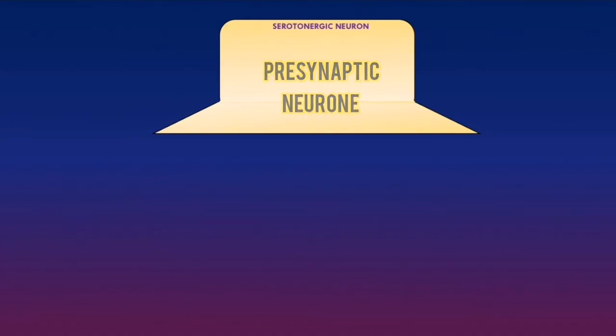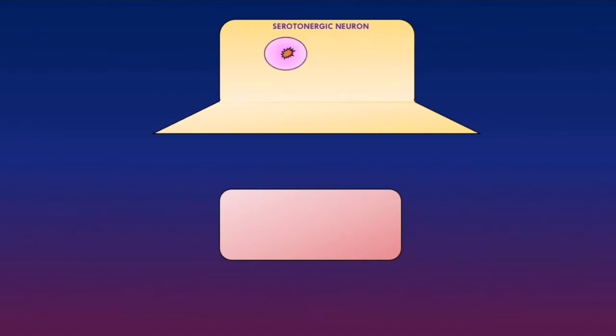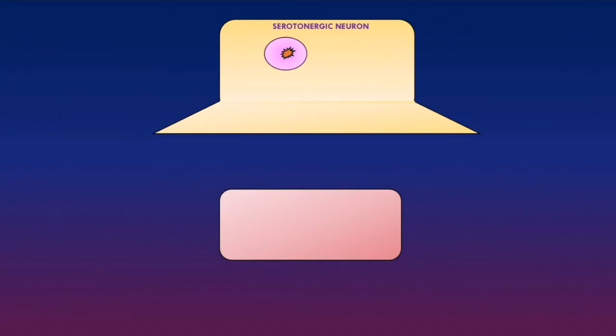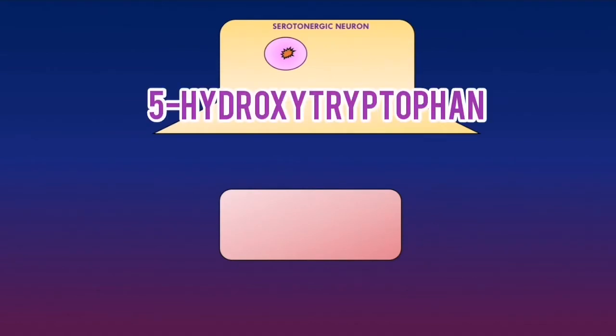In the central nervous system, there are serotonergic neurons, which means the neurons produce serotonin as a neurotransmitter. This is a schematic representation of the presynaptic neuron of a serotonergic neuron, and this is the postsynaptic neuron. In the presynaptic neuron, there are vesicles containing serotonin. This serotonin is synthesized from tryptophan, which is an amino acid, and serotonin is also known as 5-hydroxytryptophan, which is why serotonin is often abbreviated as 5-HT.